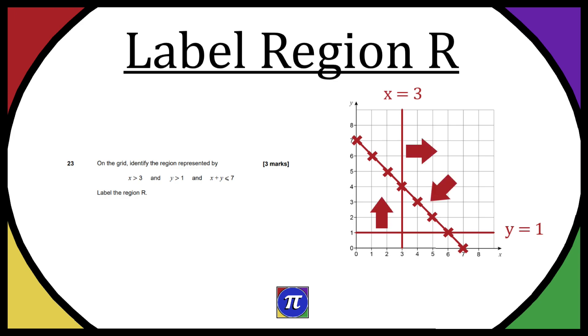So then I decided to draw arrows to show the direction that the region has to be past the line. For example y equaling 1, the arrow is pointing upwards because the region is going to be up above that. The arrow by x equals 3 points to the right because the region has to be to the right of that. And because lastly x and y has to be less than or equal to 7, I'm showing an arrow pointing to the other side of that line so we know it has to be below that.